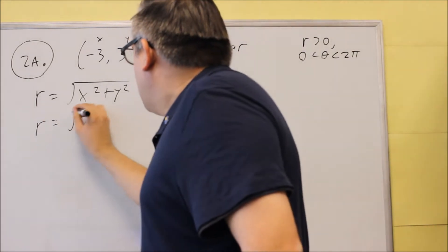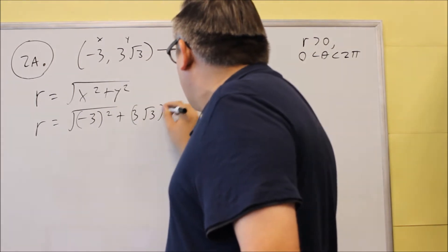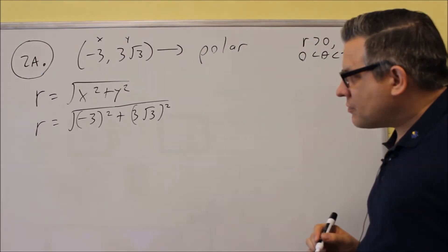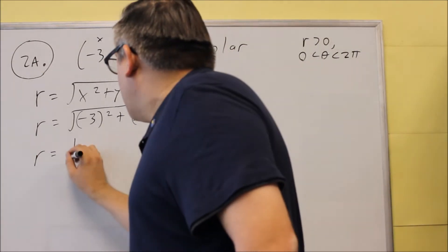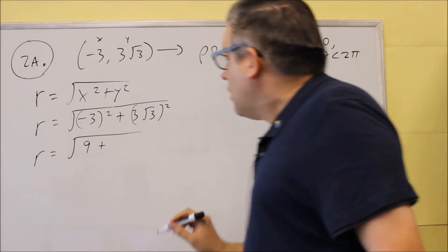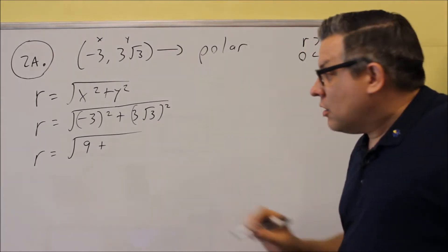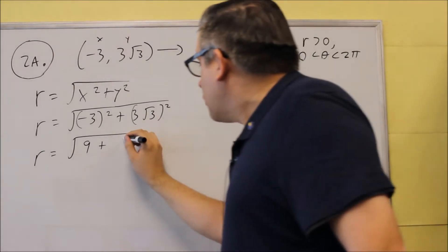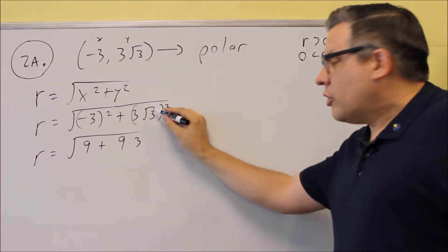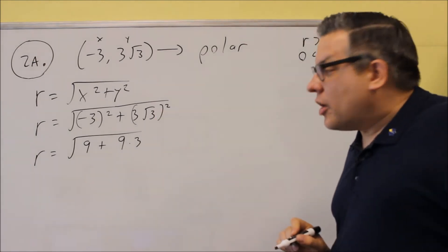So we're going to put in negative three squared plus three square root of three squared. We need to square both of those inside, so you get nine plus... When you do this, make sure you square both numbers inside. You're squaring the three, which gives you nine, and then if you square the radical, that goes away. So you end up with nine times three when you square the inside one.